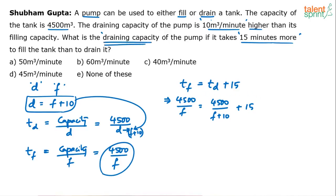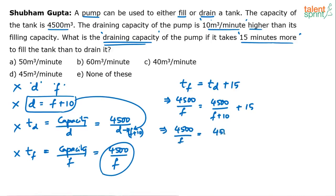We need to find the draining capacity. With this one equation, we can solve for F, and once we get F we can also get D. This is the key equation to solve. Now solving: 4500 by F equals [4500 plus 15(F plus 10)] divided by (F plus 10). Cross-multiplying gives a quadratic equation. You can either solve for F directly or go by options to verify which satisfies the equation.